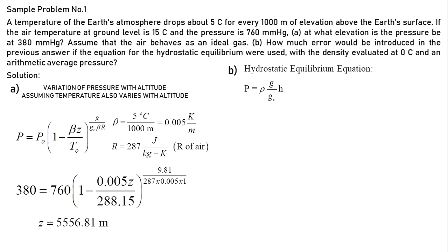At letter B, the problem states the use of hydrostatic equilibrium. So our equation for hydrostatic equilibrium is pressure equals to density times gravity times height. To compute for density, we will use the ideal gas equation and evaluate it at 0 degree Celsius and pressure evaluated at the arithmetic average pressure given.